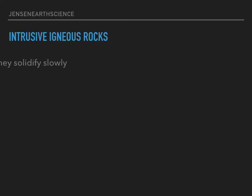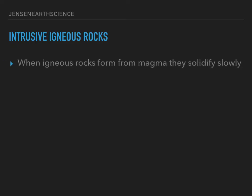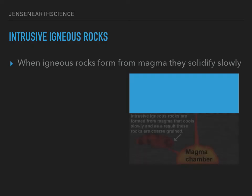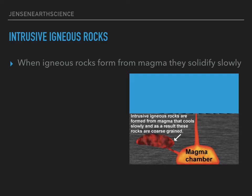Intrusive igneous rocks: when igneous rocks form from magma they cool and solidify slowly. Intrusive igneous rocks are formed from magma that cools slowly and as a result these rocks are coarse-grained. As a result of solidifying slowly, intrusive igneous rocks will have larger crystals compared to extrusive igneous rocks.